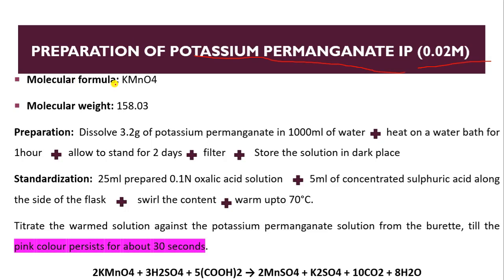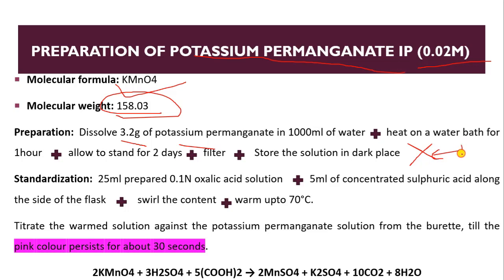The molecular formula is KMnO4, with a molecular weight of 158.03 g/mol. To prepare KMnO4, dissolve 3.2 grams of potassium permanganate in 1000 mL of water. After that, heat the solution on a water bath for one hour and allow it to stand for 2 days. Then filter it and store it in a dark place. The solution must be protected from light.